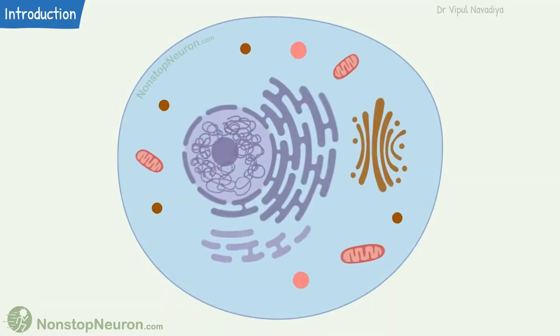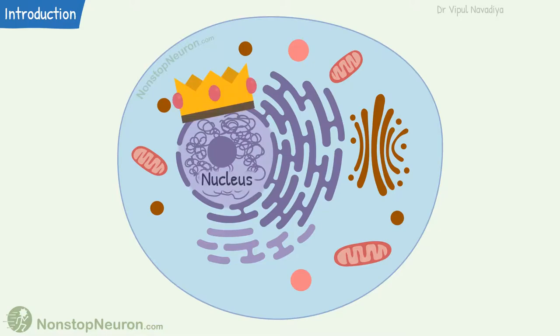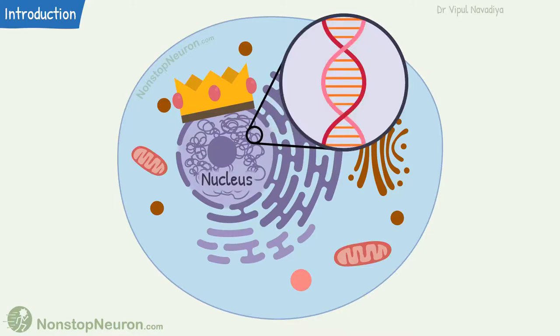A cell has many organelles. Among them, nucleus is the control center. It contains genetic information. The expression of different genes in different tissues gives them their characteristic properties.